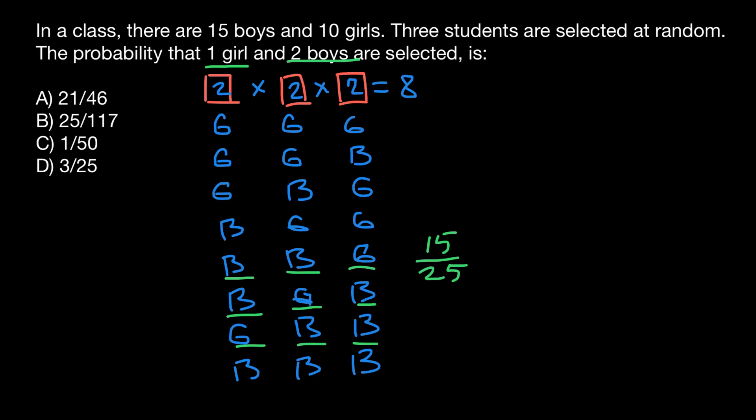Now we have left 24 people, so we are choosing from 24 people. And we already chose one boy, so we are choosing 14. Our probability would be to choose a second boy, 14 out of 24. And what would be the probability to choose a girl? To choose a girl, the probability would be 10 over 23.